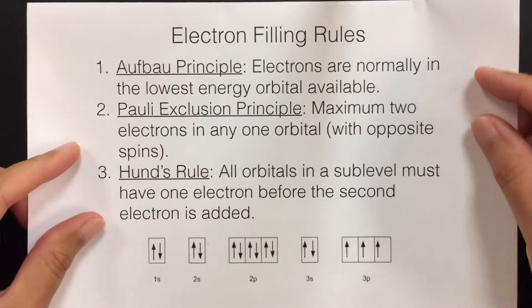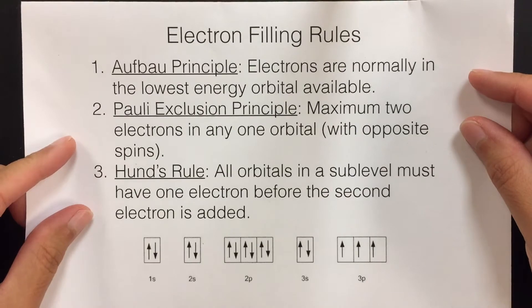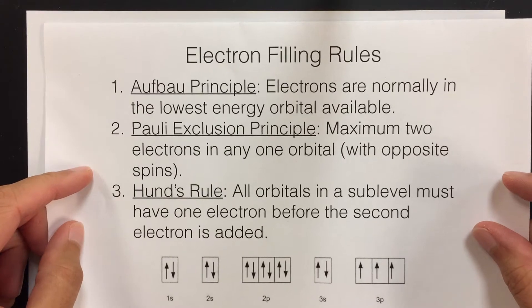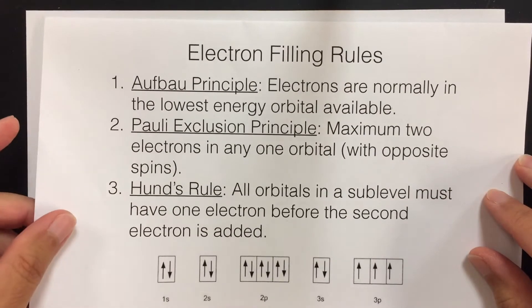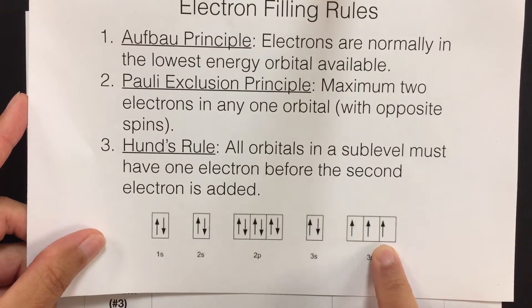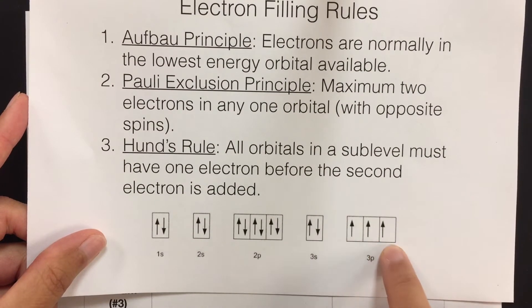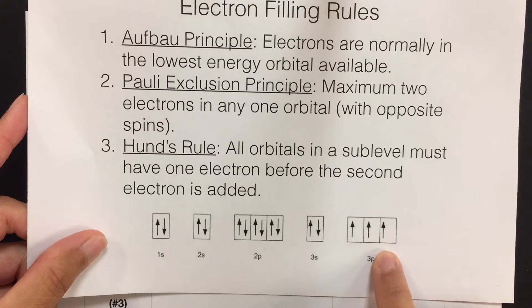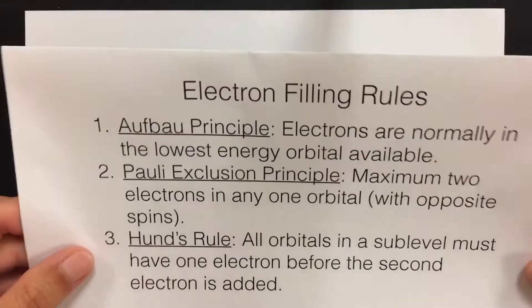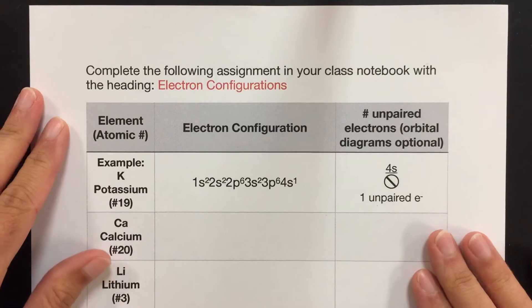To do electron configurations we need to follow our electron filling rules. These are the three rules we're going to follow. The Aufbau principle says that we need to follow the order of energy levels, starting from the lowest before we move up. Then we have the Pauli exclusion principle which says we can only have a maximum of two electrons in any one orbital. And Hund's rule tells us how we would fill up orbitals in a sub-level — we need to put one in each before we're allowed to double up. That will become important when we try to figure out how many unpaired electrons are in a given atom, and that is part of your homework for this assignment.